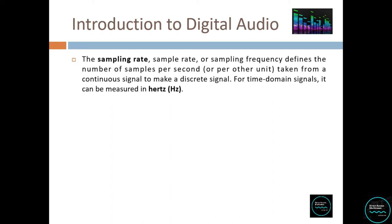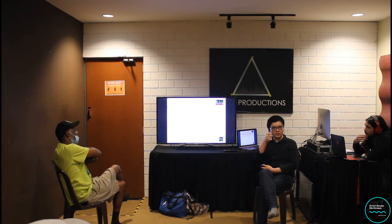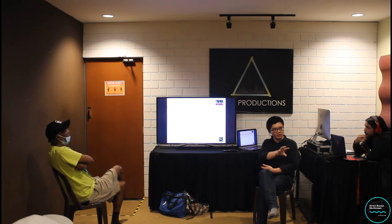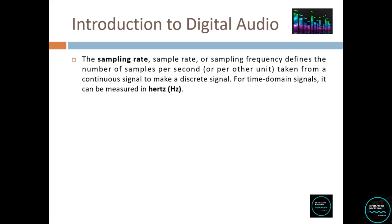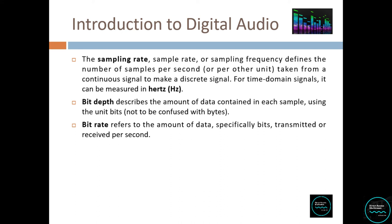Sampling rate — some people call it sample rate, some call it sampling frequency. It's simply the number of samples per second. When you plug into your audio interface and record, the sampling rate is how many times your AD converter is capturing and sampling that signal. Sampling rate is measured in Hertz. Bit depth describes the amount of data in each sample, using the unit bits — not bytes. Bit rate refers to the amount of data, specifically bits, transmitted or received per second.